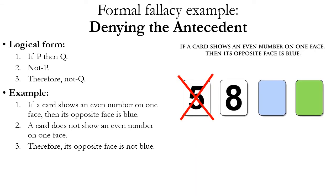Here's denying the antecedent in the Wason selection task context: if a card shows an even number on one face, then its opposite face is blue; this card does not show an even number on its face; therefore its opposite face is not blue. If you thought we had to flip over the five to see if it had a blue face on the other side, you were committing this fallacy. You can see how much easier it is to commit the fallacy in a non-social rule context.